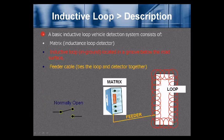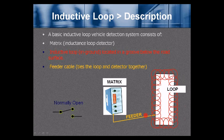A basic inductive loop vehicle detection system consists of the Matrix inductive loop detector, an inductive loop in the ground located in a groove below the road surface, and a feeder cable that ties the loop and detector together. The feeder cable is typically twisted, and you must determine how many turns to make for the loop.